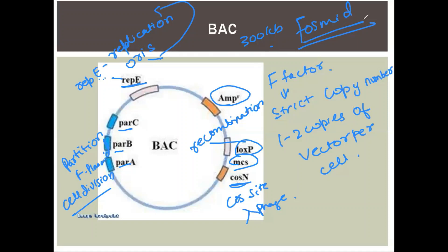The lambda phage cos-site allows packaging of the plasmid DNA into phage head particles — this is what makes it a cosmid or mini-BAC type vector.